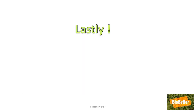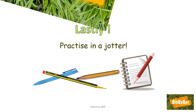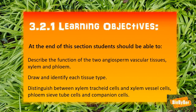You must be able to draw large, clear, well-labeled diagrams of these structures and know the functions of each part — practice in a jotter. Now that we've reached the end of the lesson, have we achieved our objectives? Can you describe the function of the two angiosperm vascular tissues, xylem and phloem? Can you draw and identify each tissue type? Can you distinguish between xylem tracheid cells and xylem vessel cells, and between phloem sieve tube cells and companion cells?